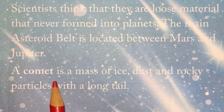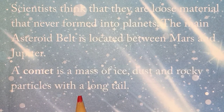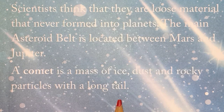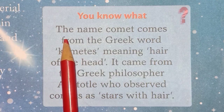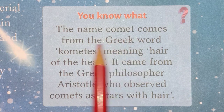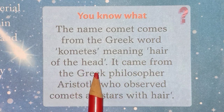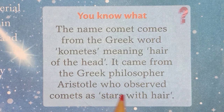A comet is a mass of ice, dust, and rocky particles with a long tail. Sometimes we see something falling from the sky — that is a comet. The name 'comet' comes from the Greek word meaning 'hair of the head,' observed by the Greek philosopher Aristotle, who described comets as stars with hair.